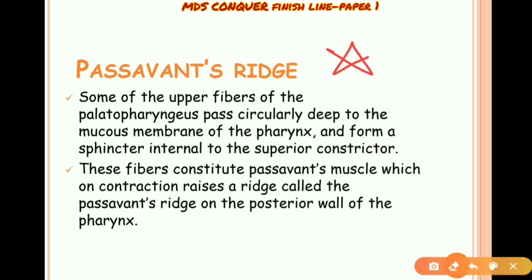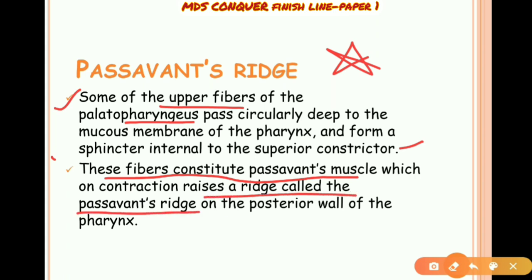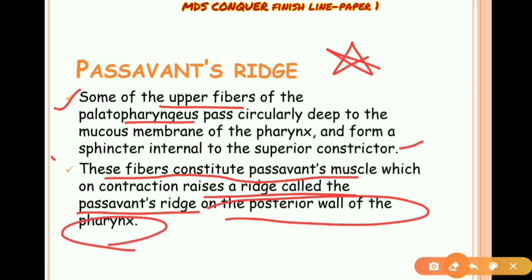Passavant's ridge is an important structure: some upper fibers of the palatopharyngeus pass circularly deep into the mucous membrane of the pharynx and form a sphincter internal to the superior constrictor. These fibers constitute Passavant's muscle, which on contraction raises a ridge called Passavant's ridge on the posterior wall of the pharynx.